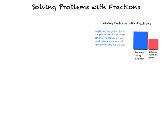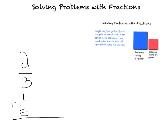So let's start solving our problem. I added our word problem here off to the side so you can go back and reference it whenever you need to. The first thing I need to do is figure out how much paint did she use in the bedroom and the bathroom. So let's put that equation together. I am going to take two thirds plus one fifth, because that's how much paint was used together. That is my equation. Now I have to find what is called the least common denominator, or LCD.